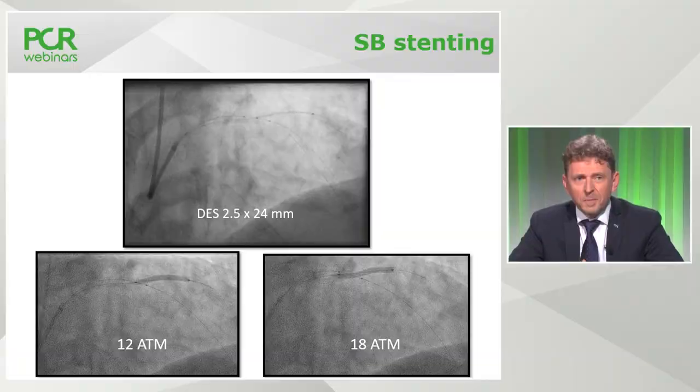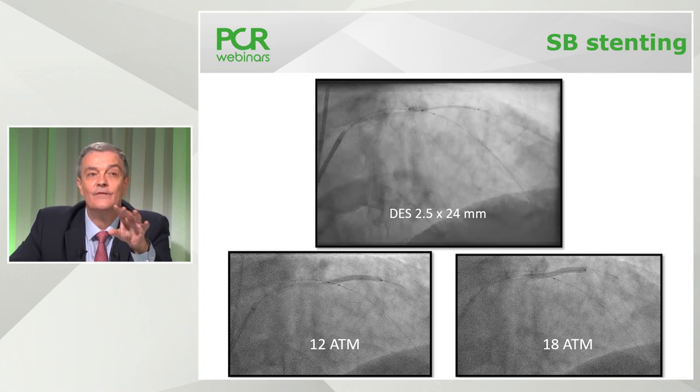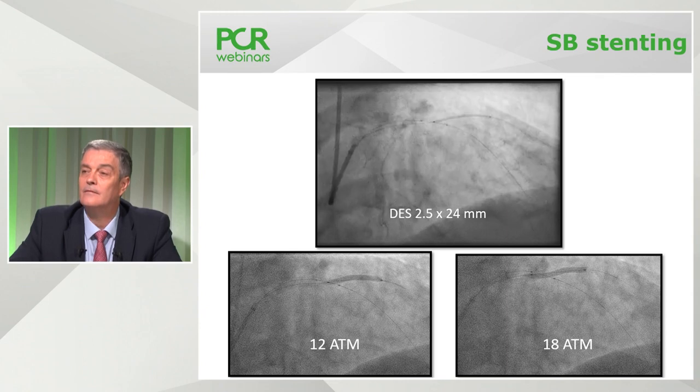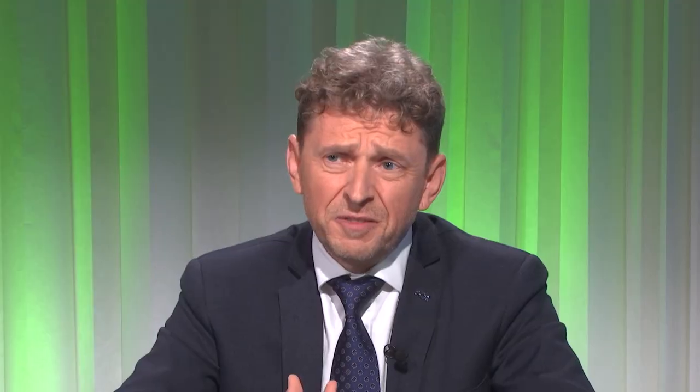A nice question from our colleagues: upfront drug-coated balloon of the side branch rather than provisional of the main branch — any experience? I think stents are needed. The LAD is a big vessel. I'm not a big fan of combining drug-eluting balloon and drug-eluting stents, and there are no data available. This is a case where you're going to need to scaffold the bifurcation properly. Drug-eluting balloons are great, but it's a balloon at the end of the day — you risk vessel closure one hour, two hours, three hours post-procedure. This unfortunately needs two stents.